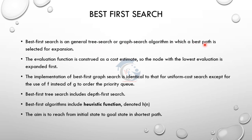In best first search, we find out and expand the best path using an evaluation function f(n), which gives a cost estimate. The node with the lowest cost is expanded. In uninformed search, there is a difference: uniform cost search uses g(n), whereas best first search uses f(n).